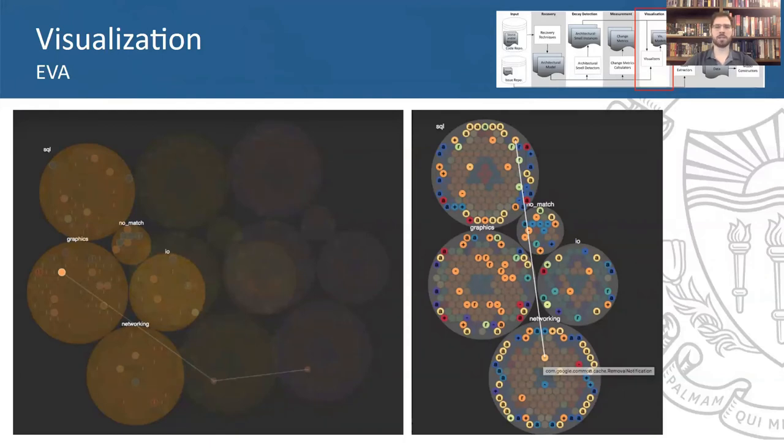On the right, we have the Pairwise Architecture Comparison view, which shows which implementation entities have been added, removed, moved, or changed between a pair of subsequent versions.